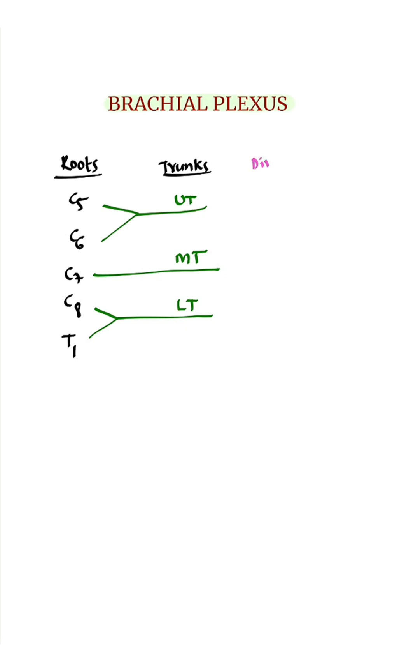Divisions: Each trunk gives anterior and posterior divisions. Divisions join to form cords. They form 3 cords.